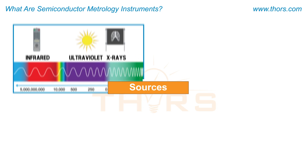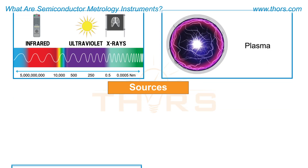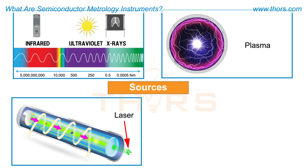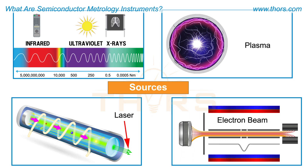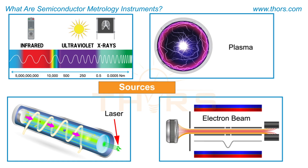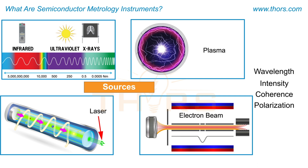Semiconductor Metrology instruments use various optical sources such as deep ultraviolet or DUV, plasma, laser, X-ray, and infrared or IR, and charged particle sources such as electron beam and ion beam for different measurements and analyses. The choice of the source depends on the specific requirements of a measurement such as wavelength, intensity, coherence, and polarization.